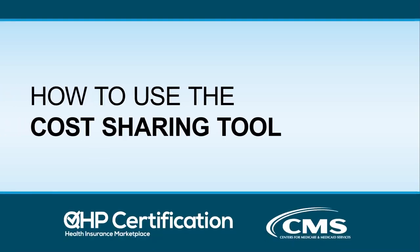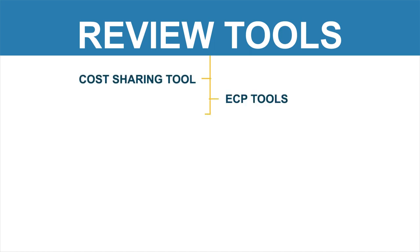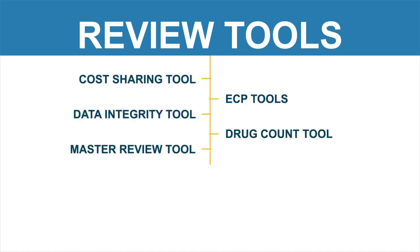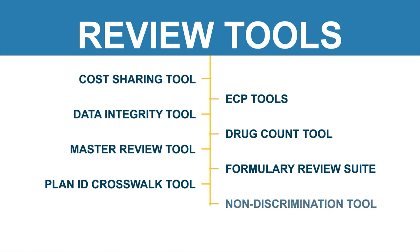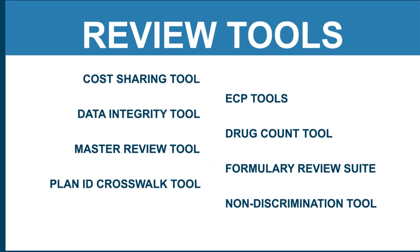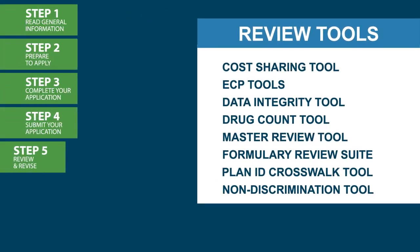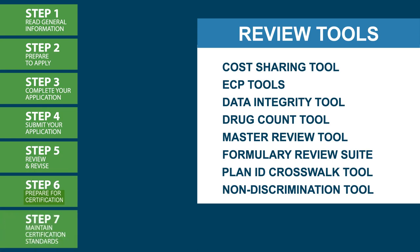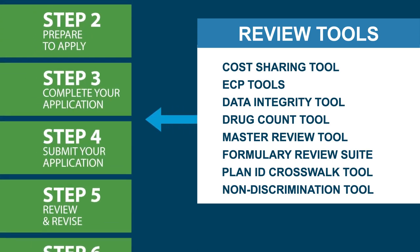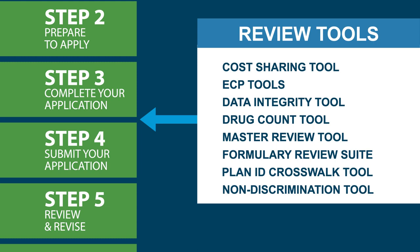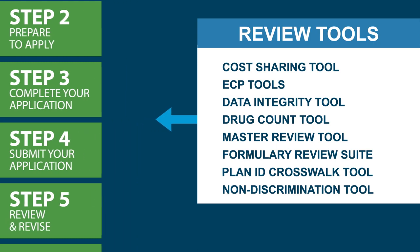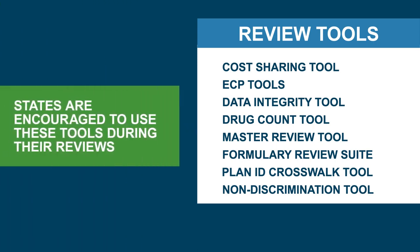How to Use the Cost Sharing Tool. Did you know that CMS provides review tools that issuers and states can use to prepare for the QHP application process? These review tools allow you to check for errors within your QHP application that would result in corrections after submission. Issuers are encouraged to use these tools to identify and correct data errors prior to submitting application data in order to reduce the number of required corrections identified during CMS's reviews.